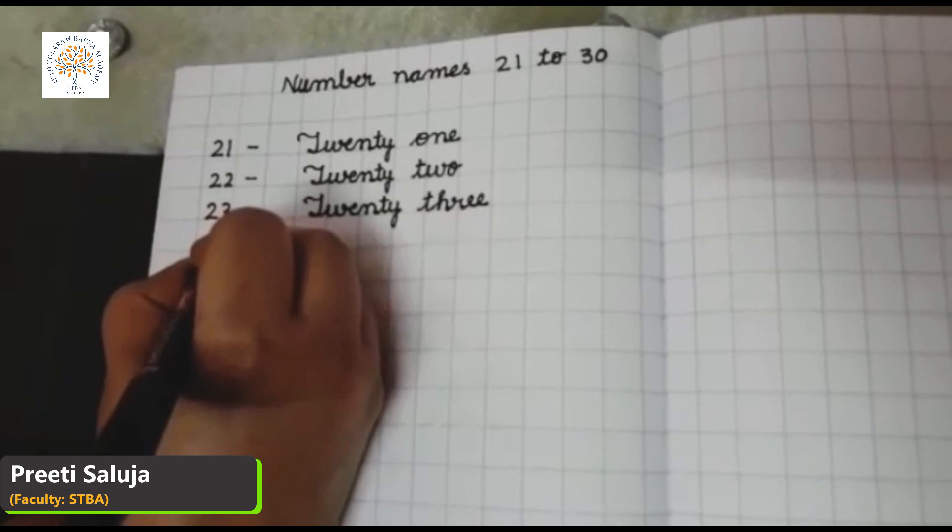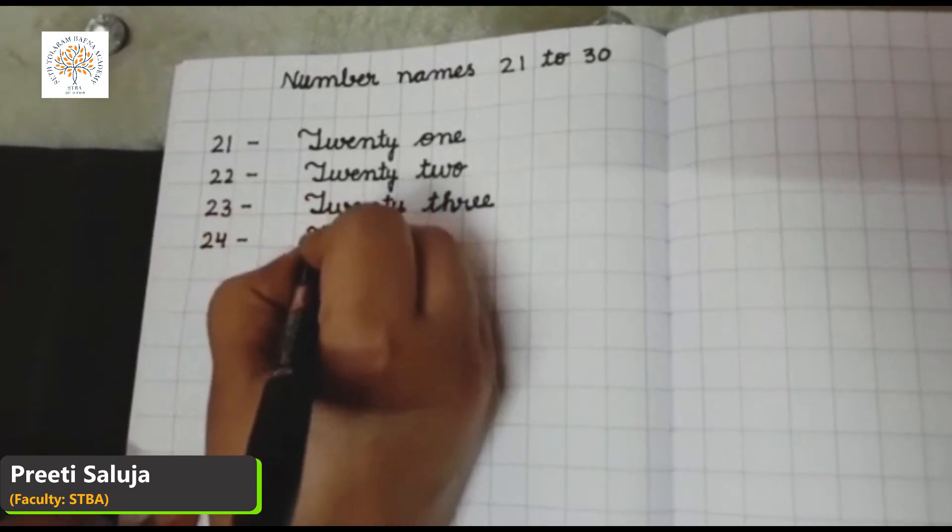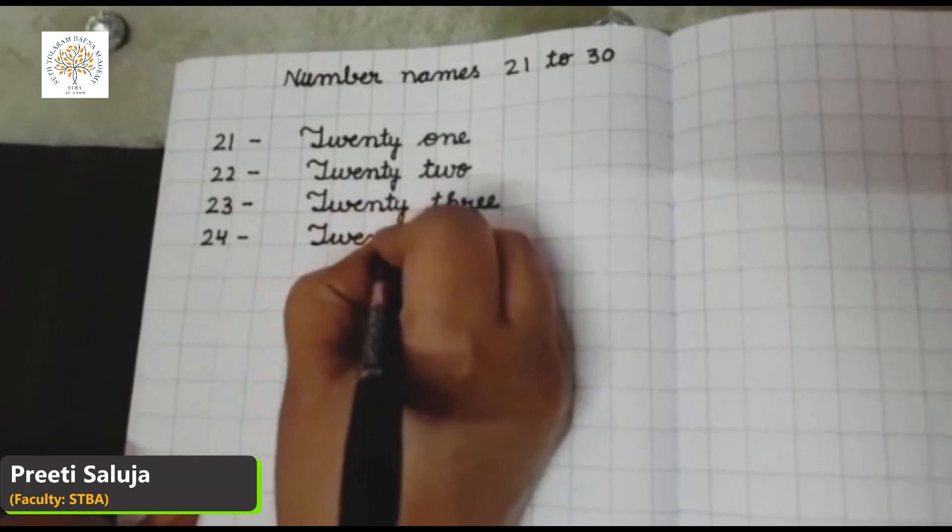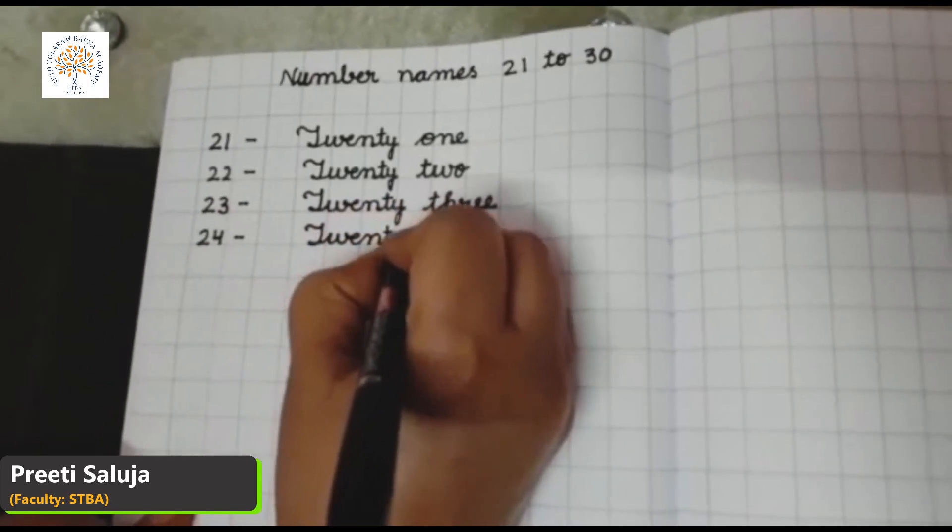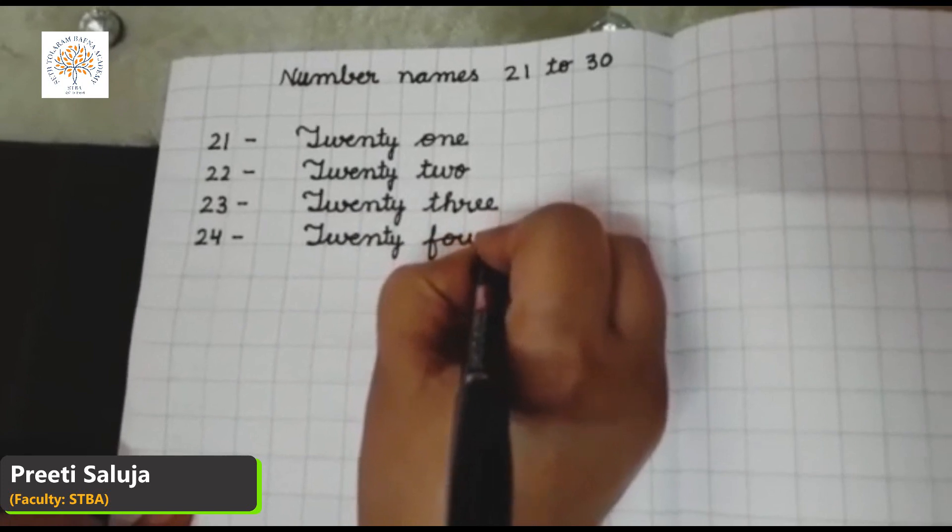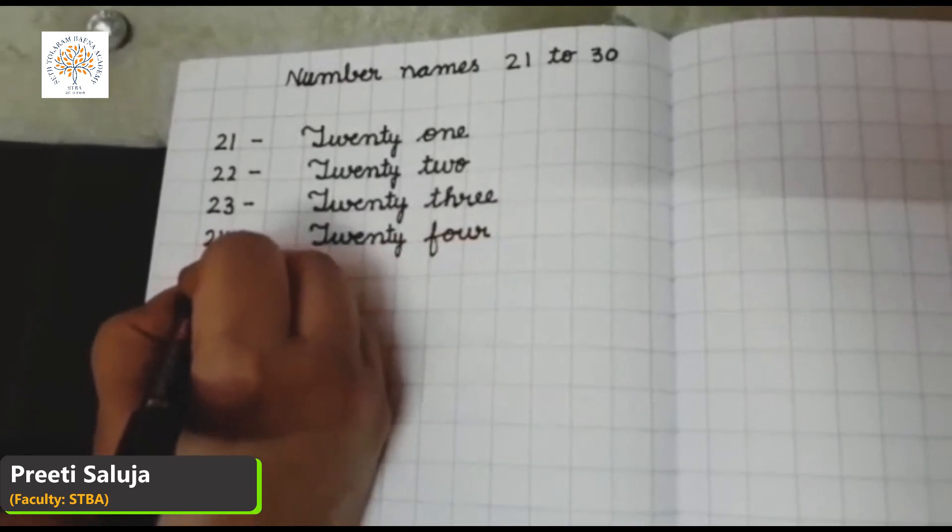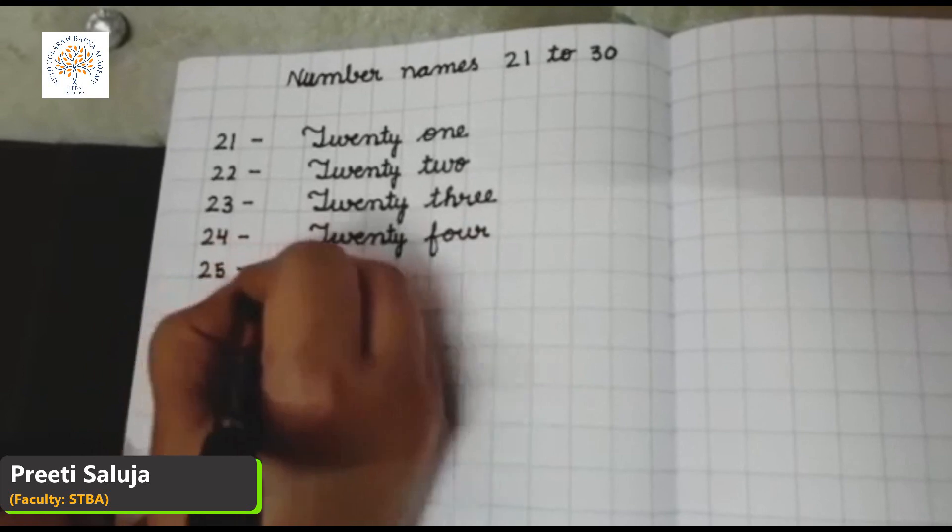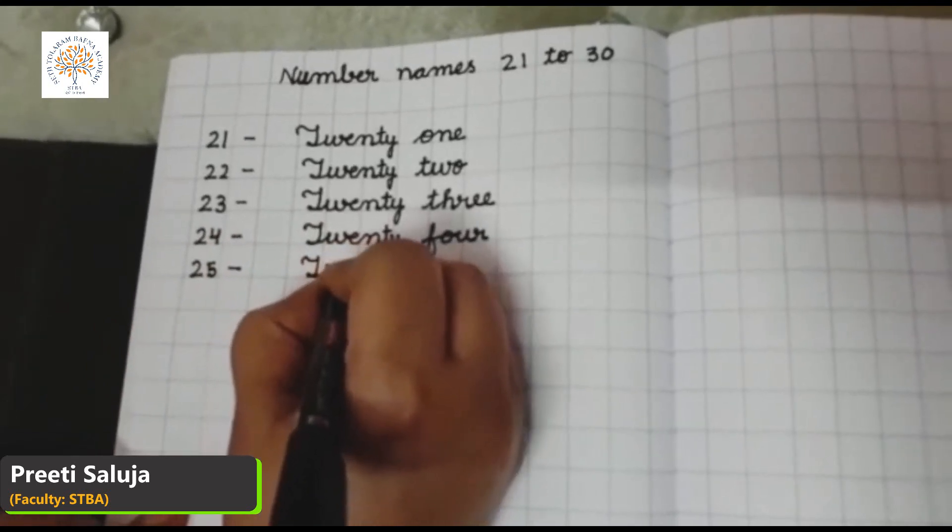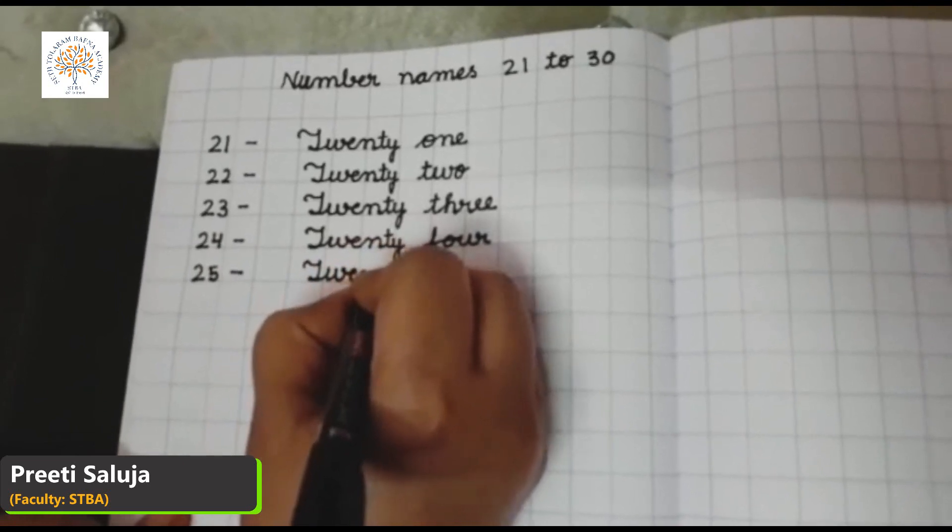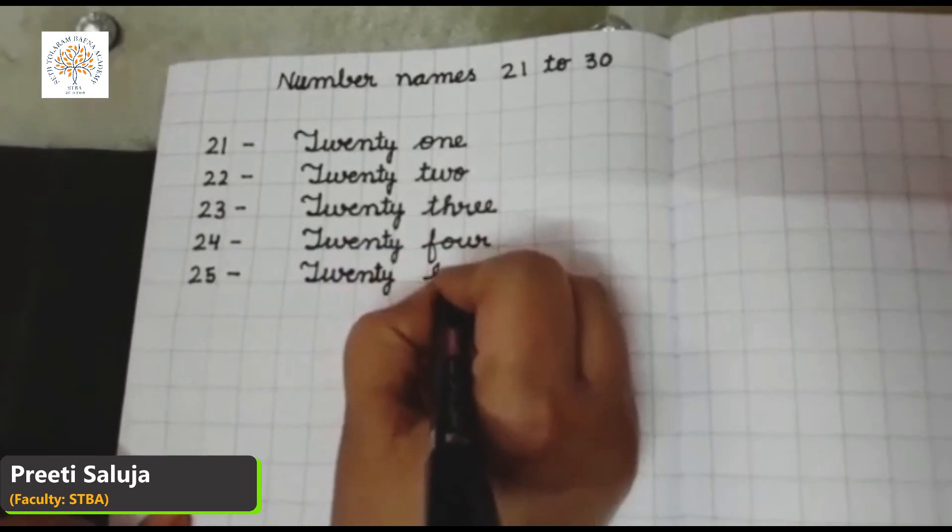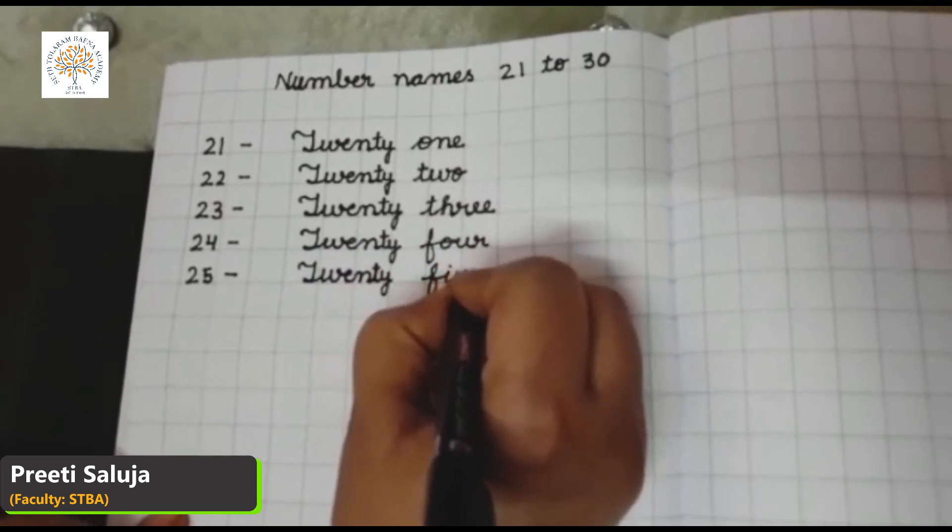24, T-W-E-N-T-Y, 20, F-O-U-R, 4. 25, T-W-E-N-T-Y, 20, F-I-V-E, 5.